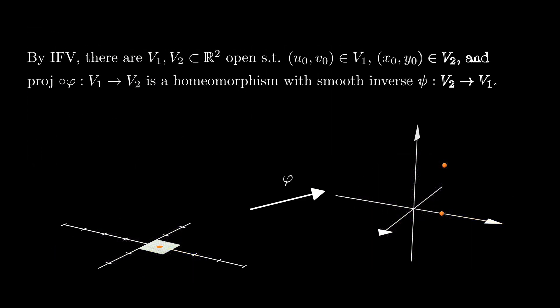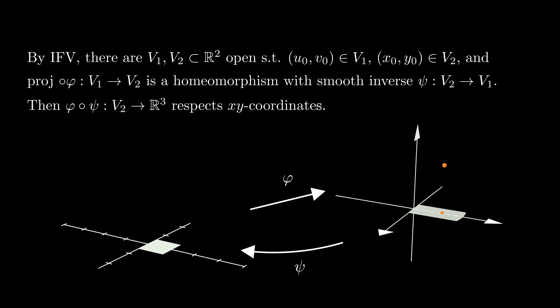there are neighborhoods V1 of (u0, v0) in the uv-plane and V2 of (x0, y0) in the xy-plane, such that phi composed with a projection is a smooth homeomorphism with smooth inverse from V1 to V2.